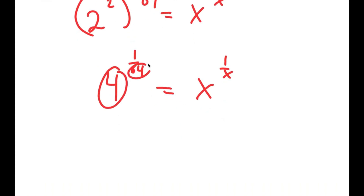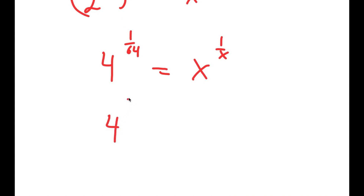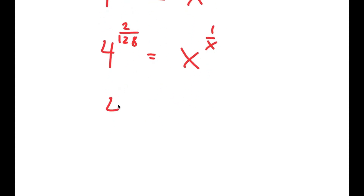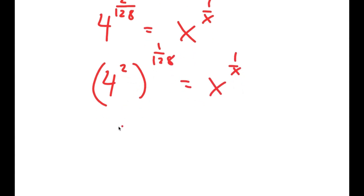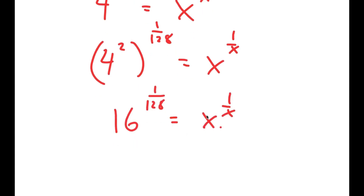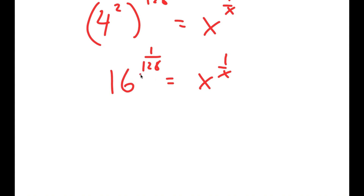Now these two numbers still aren't the same, so we're going to repeat the process once again. 1 over 64 is the same thing as 2 over 128. I can rewrite this as 4 squared to the power of 1 over 128. Now 4 squared is 16, so I get 16 to the power of 1 over 128 is equal to x to the power of 1 over x. And they still aren't the same.